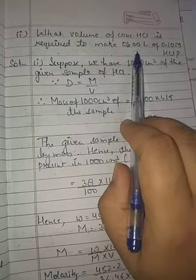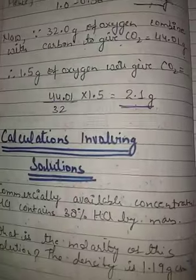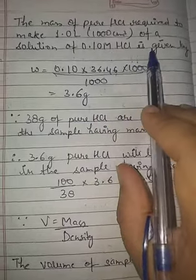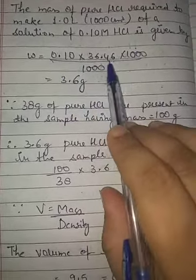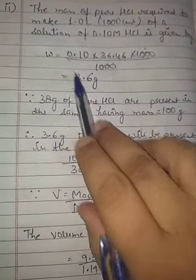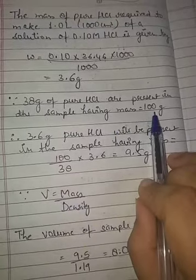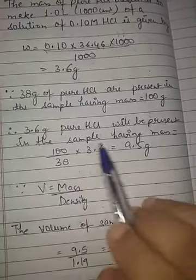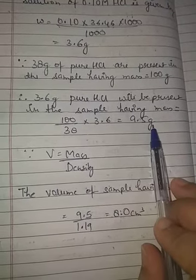For the second part: to make 1 liter of 0.10 molar HCl, the mass of pure HCl required is w = 0.10 × 36.46 × (1000/1000) = 3.6 grams. Since 38 grams of pure HCl is present in 100 grams of sample, 3.6 grams of pure HCl will be present in a sample of mass = (100/38) × 3.6 = 9.47 grams.